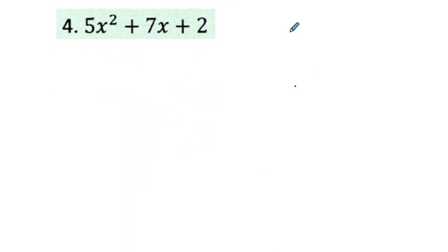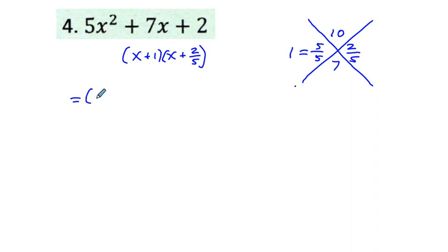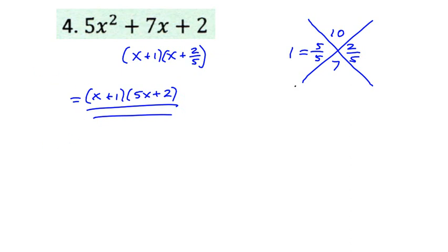Number 4: 5x² + 7x + 2. We use the x-method again. On the top we put a·c = 5 × 2 = 10, and on the bottom b = 7. Two numbers that add to 7 and multiply to 10: that's 5 and 2. Divide each by a = 5: 5/5 = 1 and 2/5. So we have (x + 1)(x + 2/5). Using bottoms-up, we move the 5 up: our answer is (x + 1)(5x + 2).